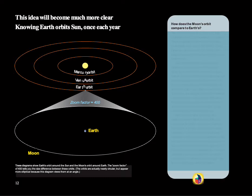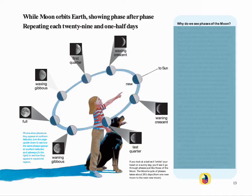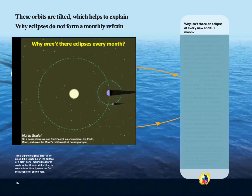This and the next page explain details important to eclipse prediction. As the rhyme says, two important ideas are the fact that Earth orbits the Sun and the Moon orbits Earth. This page shows how you can understand the Moon's phases by looking at a ball moving around your head on a sunny day so that we see different portions of the ball, or Moon, illuminated as it changes its position relative to the Sun in our sky. Notice that the 29 and one-half day cycle of phases is about a month, which would therefore better be called a moonth.